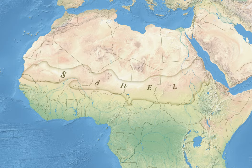The Sahel part of Africa includes parts of northern Senegal, southern Mauritania, central Mali, northern Burkina Faso, the extreme south of Algeria, Niger, the extreme north of Nigeria, central Chad, central and southern Sudan, the extreme north of South Sudan, Eritrea, Cameroon, Central African Republic, and the extreme north of Ethiopia. Historically, the western part of the Sahel was sometimes known as the Sudan region, roughly located between the Sahara and the coastal areas of West Africa.